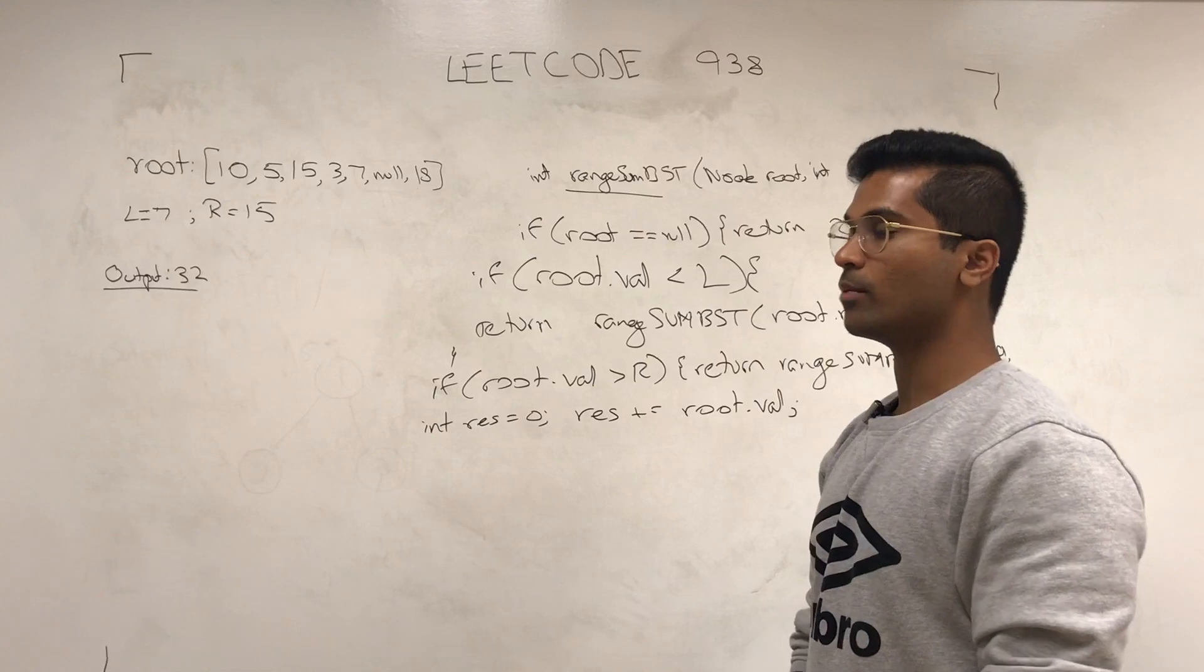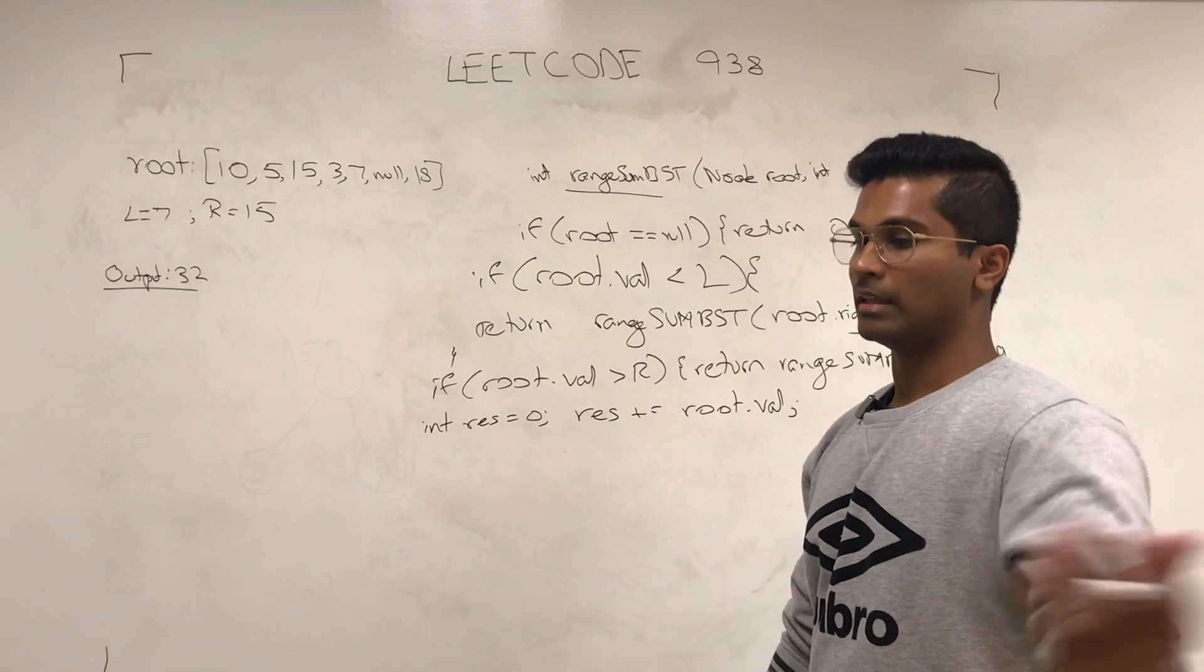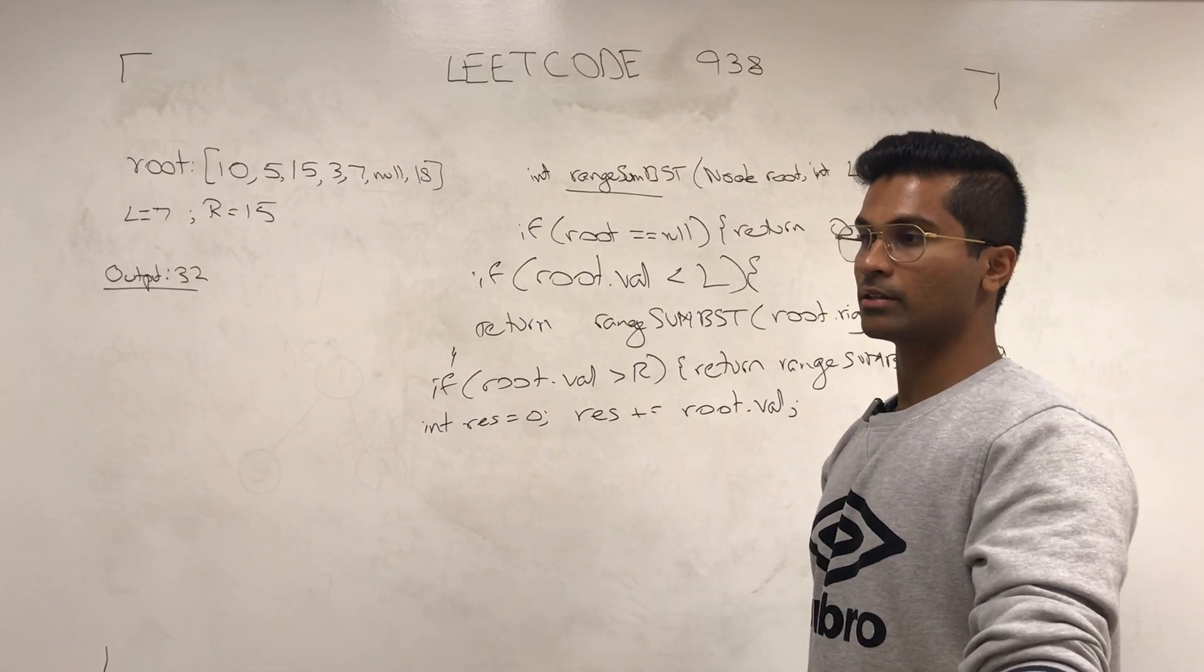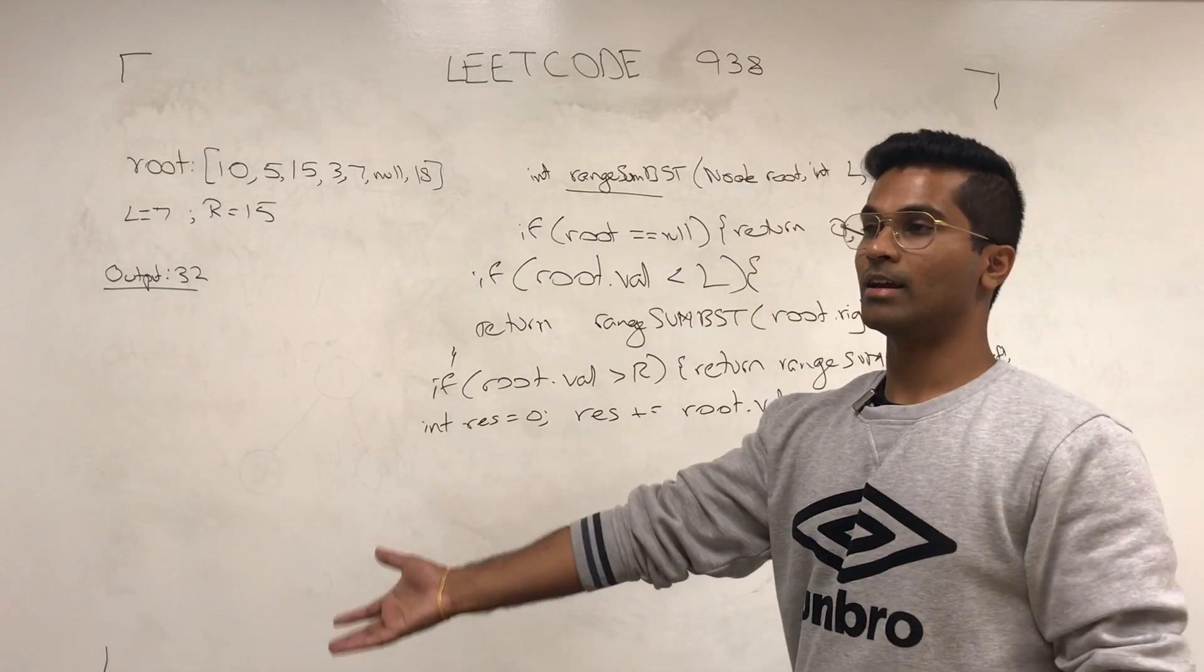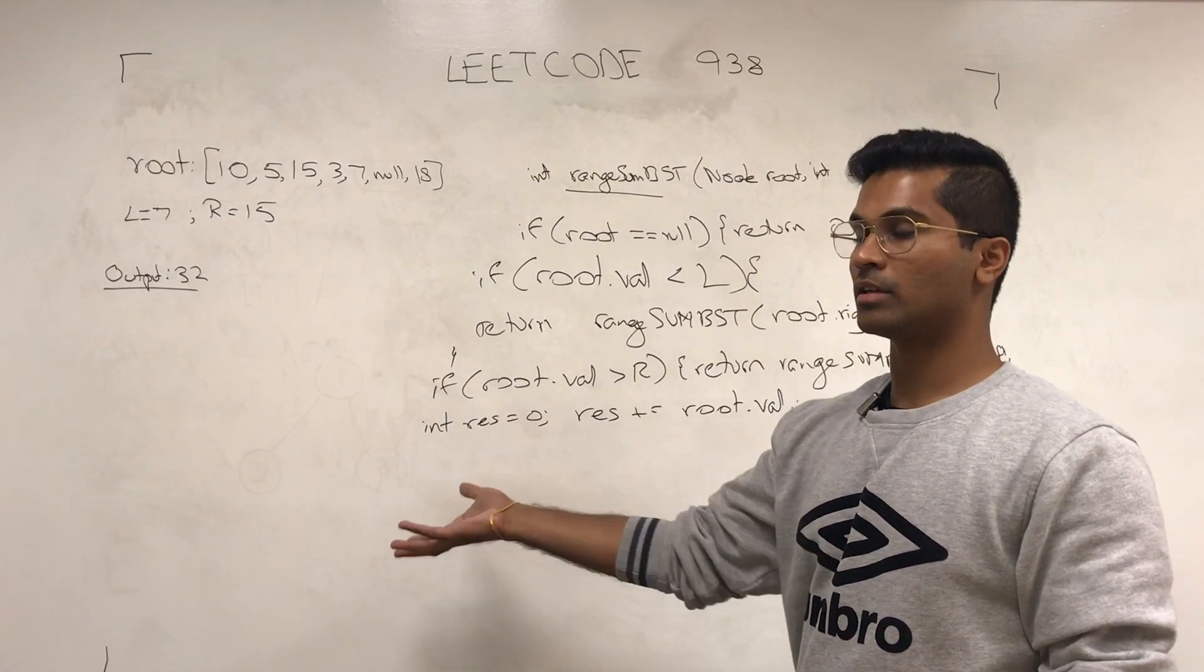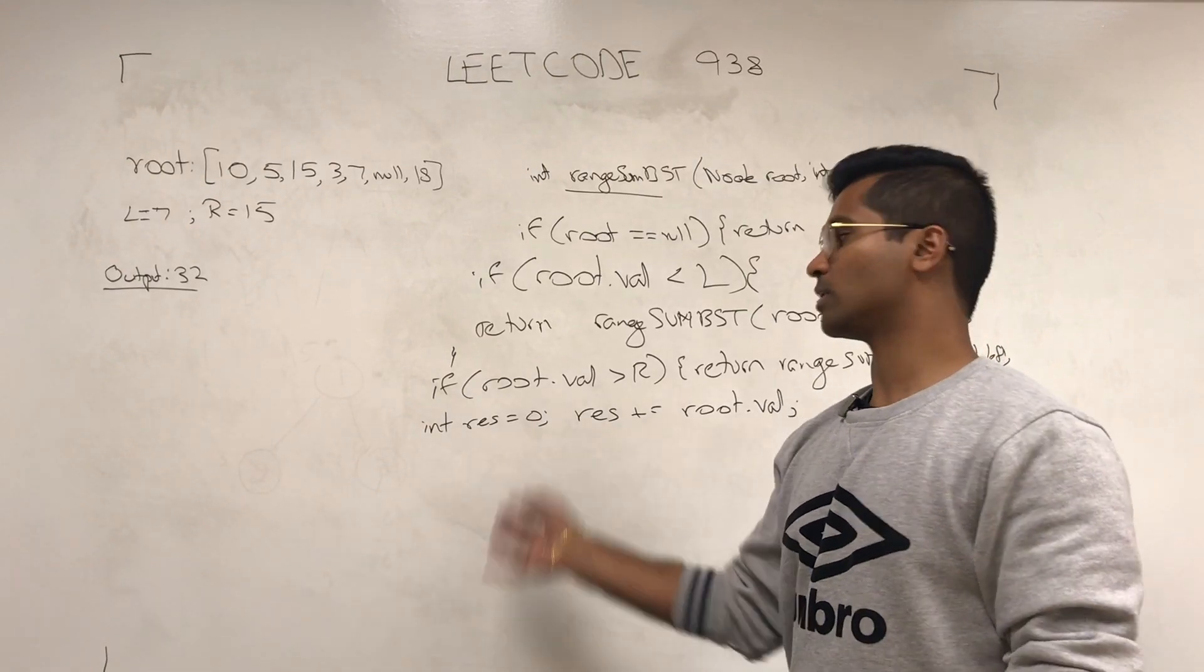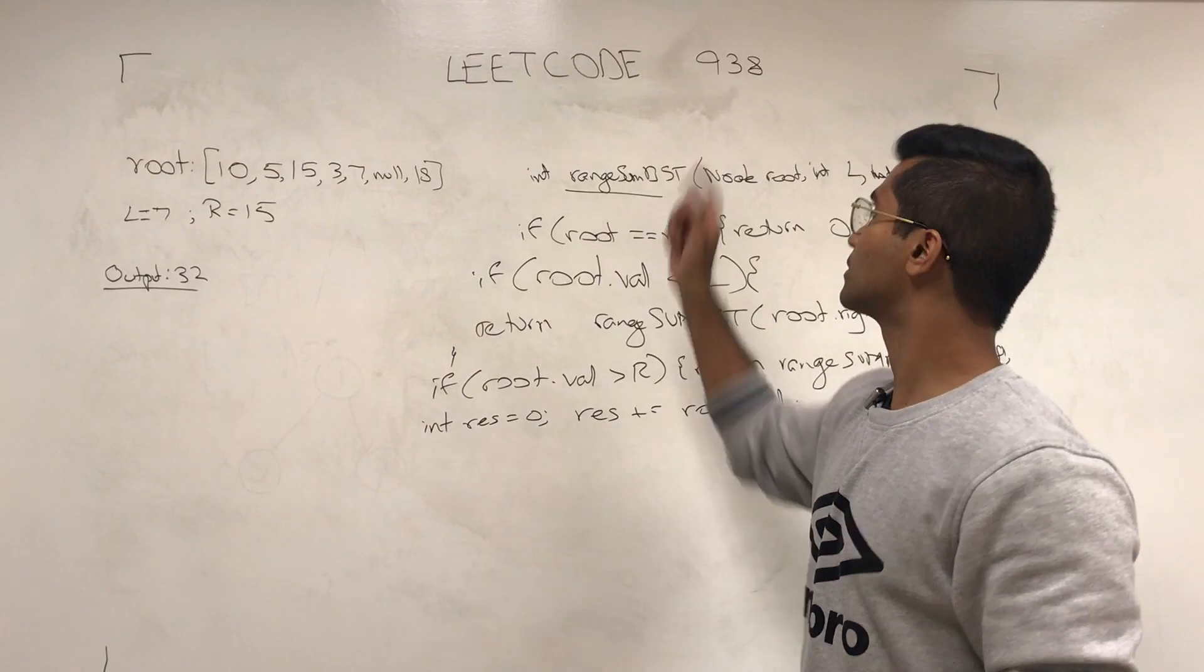If the root is okay with itself, it's going to say, hey, left child, I'm going to give you the function, tell me what needs to be added to my res, and hey, right child, I'm going to give you the function, tell me what needs to be added to my res. Once they return, we just return res, and that's how you're going to solve this guy.